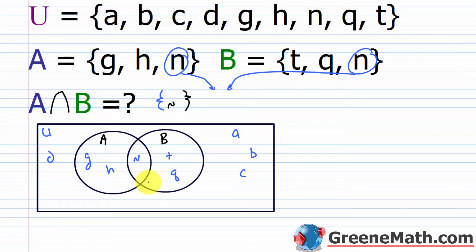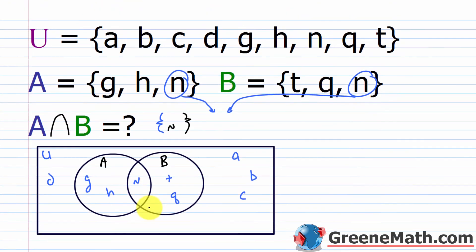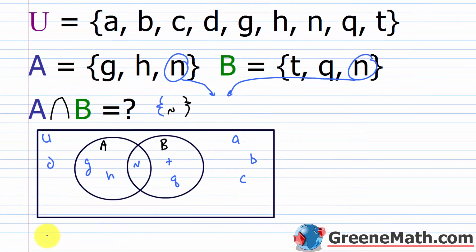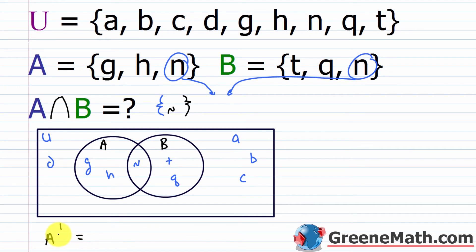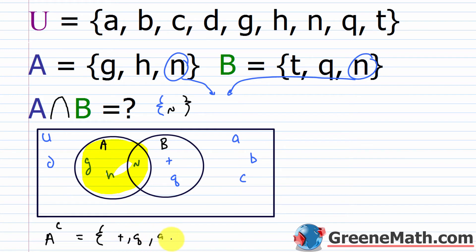What if I asked for A complement? That's anything outside of A. Looking at the Venn diagram and identifying everything outside of A, I get t, q, a, b, c, and d. Note that the order in which you list elements is irrelevant when listing the elements of a set.